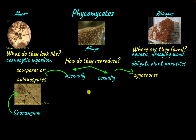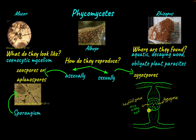Sexual reproduction occurs through zygospores. When two compatible haploid hyphae come together, the cytoplasm first fuses and then eventually the nuclei fuse to form the diploid zygospore. The diploid zygospore then undergoes meiosis to produce haploid spores.